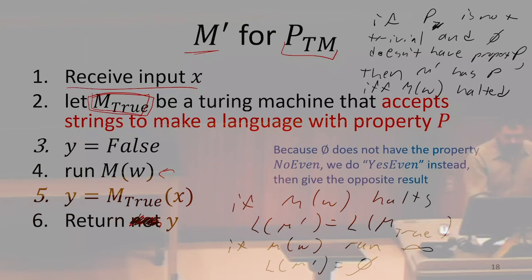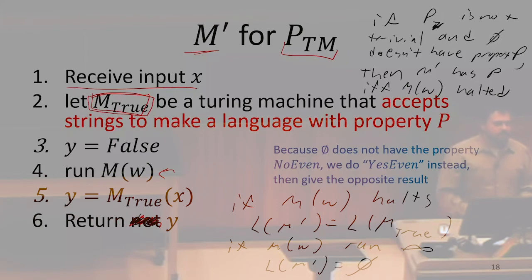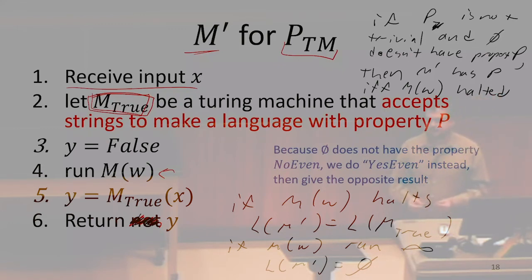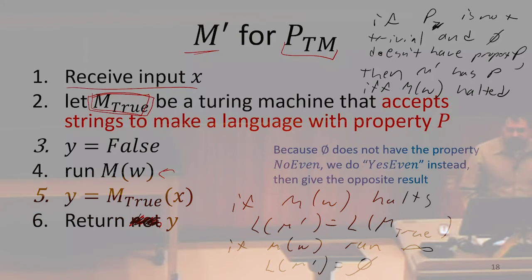If M on w ran forever, then the language of M' equals the empty language — it didn't accept anything. So if we assume the empty language doesn't have property P, then M' has property P if and only if M halted on w. Since the language of M' matches M_true's language if M halted, and equals the empty language if M ran forever, M' has property P if and only if M halted on w.